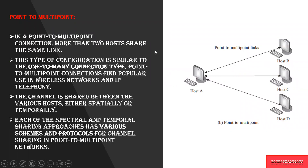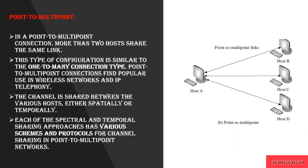Point-to-multipoint connection means one point is connected to multiple points — two or more hosts sharing information, a one-to-many connection. Point-to-multipoint connections find popular use in wireless networks, where you can wirelessly communicate with others. The channel is shared between various hosts, and each approach has various schemes and protocols to be followed to communicate with each other.